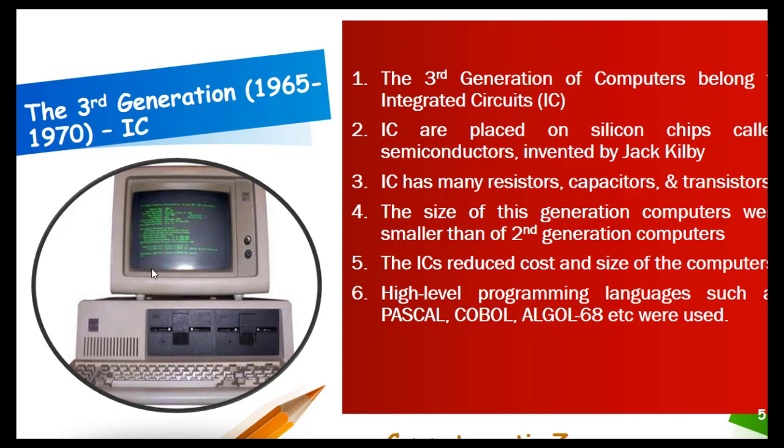To summarize the progression: first generation systems were quite large, occupying a whole room or building. Then the second generation came, and then the third generation — computers were getting smaller and smaller, more efficient, and lesser in size with each successive generation.